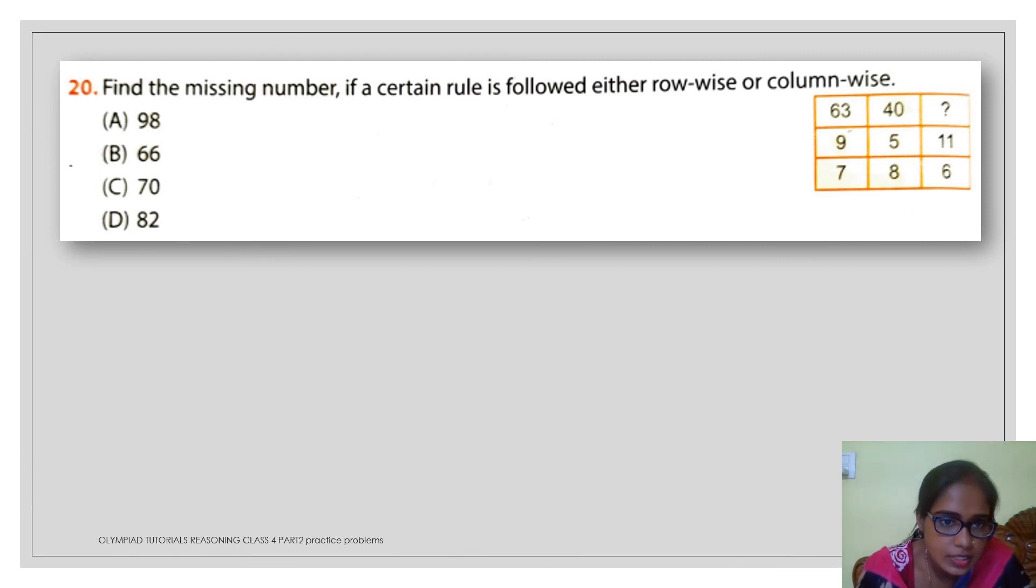In this example you can see find the missing number if a certain rule is followed either row wise and column wise. Here you can see if you just compare the rows then you will not find any such relation between the numbers. But if you observe each column separately then easily you can just figure out that what will be the relation.